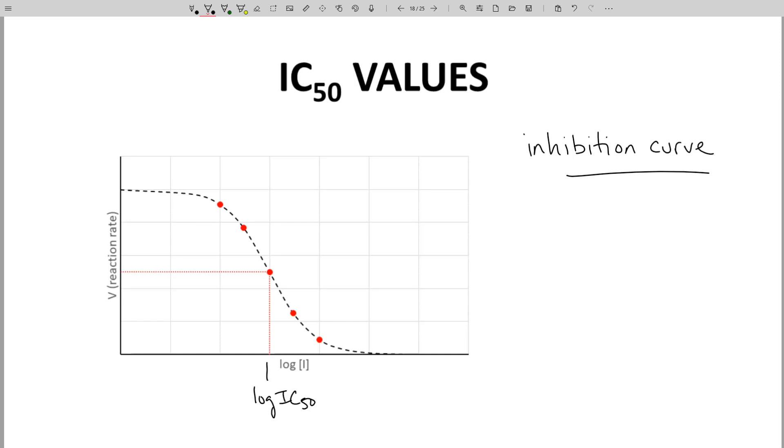More substrate gives a similar curve, but the observed IC50 value will be different. More substrate gives a higher IC50, and that appears as a lower potency. Less substrate gives a lower IC50, a higher potency.